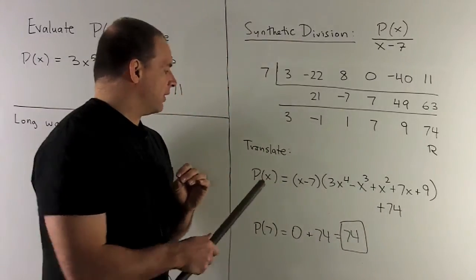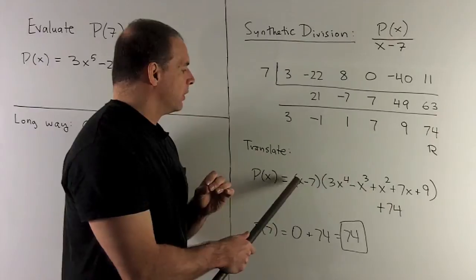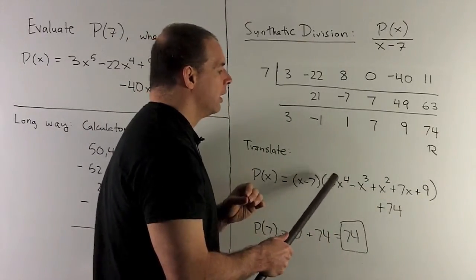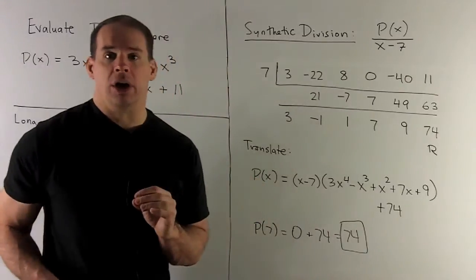If I put 7 in here, we're going to get 0. We won't have to worry about this since we're multiplying by 0, so we'll be left with the remainder of 74.